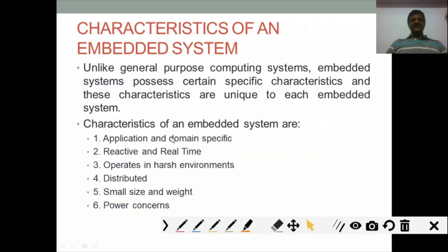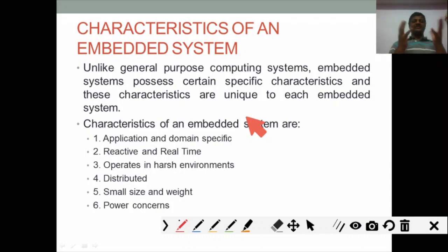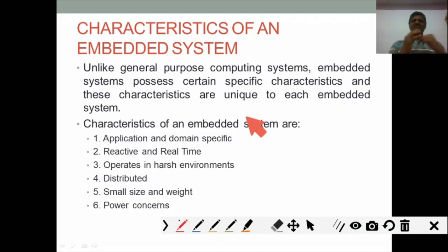To summarize, the main characteristics of an embedded system are: application and domain specificity, whether it is reactive or real-time, ability to work in any environment, whether it is distributed or standalone, small size and weight, and power concerns. These are the basic characteristics to keep in mind when designing any embedded system.